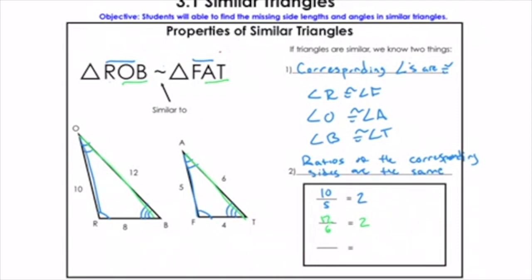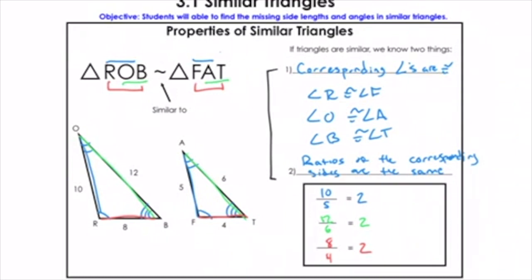And then looking at our last ratio, RB to FT — that's 8 to 4, and the ratio is again 2. So those are the two big facts about similar triangles. The corresponding angles are congruent, and the ratios of the corresponding sides are the same — 10 to 5, 8 to 4, 12 to 6 all equal a ratio of 2. For instance, if that last side were 18 instead, the ratio would be 3, not 2 — so those triangles wouldn't be similar. All ratios always have to be the same.